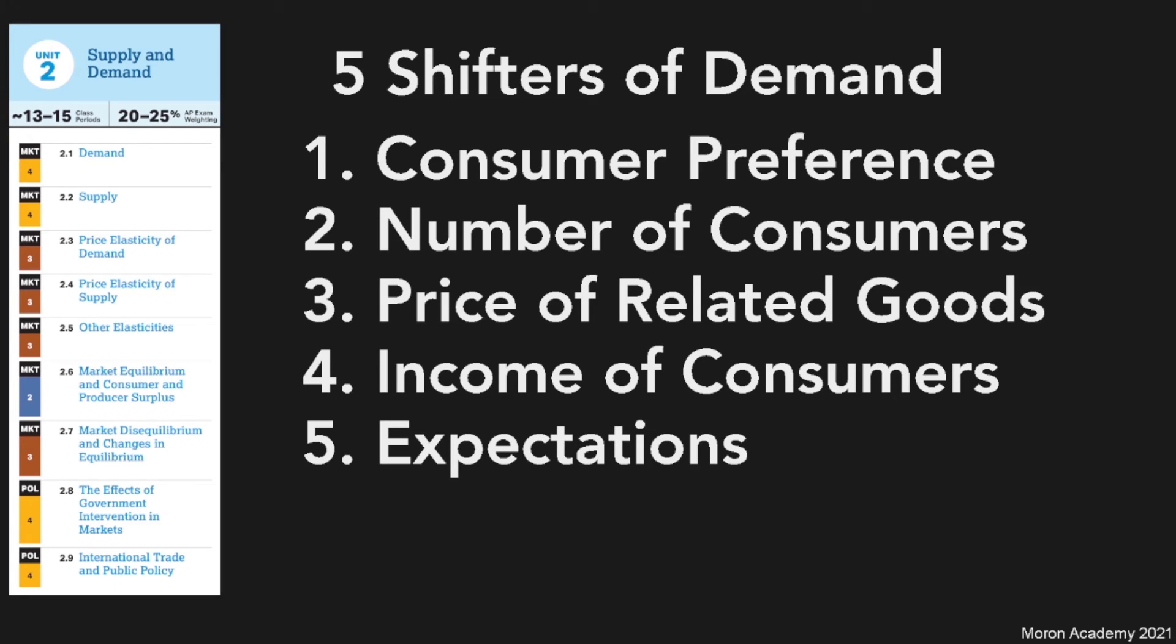For number five is expectations. This is really simple. It's just if you expect apple juice to go down in price next week, the demand for apple juice will go down this week.